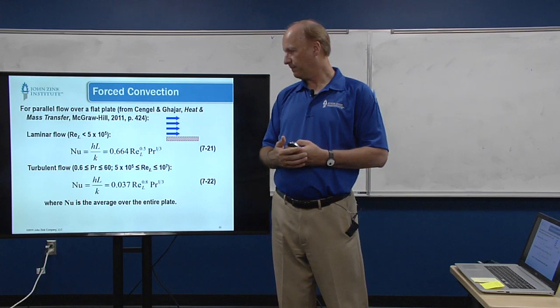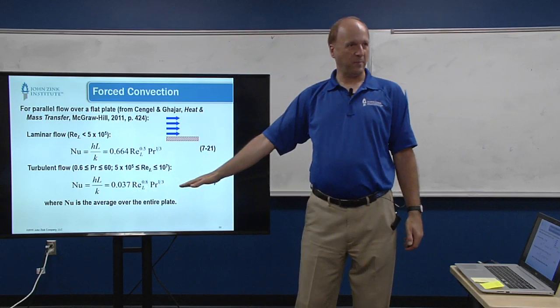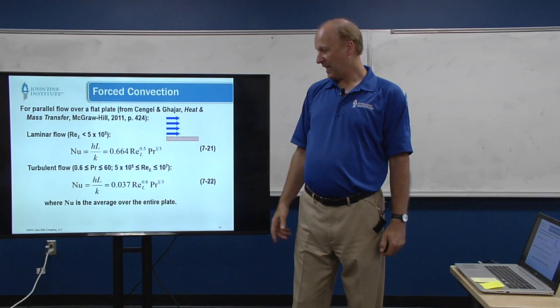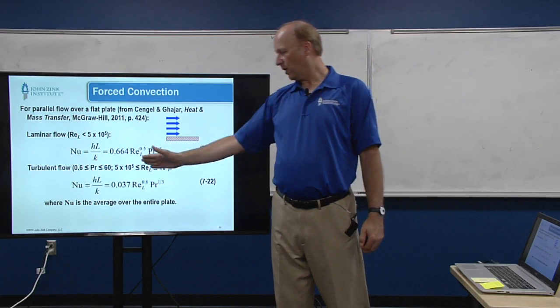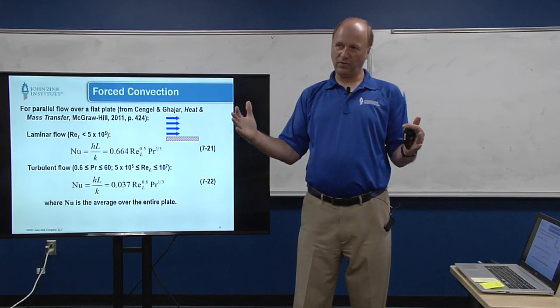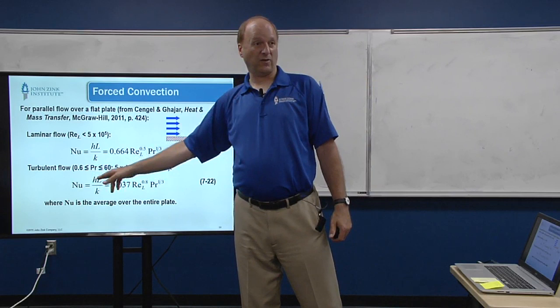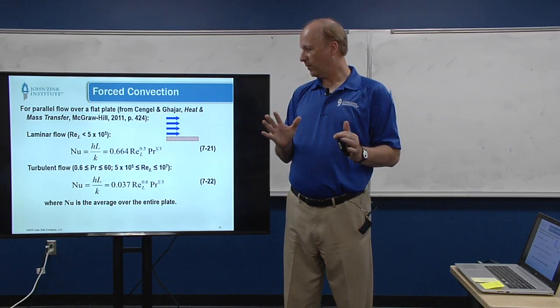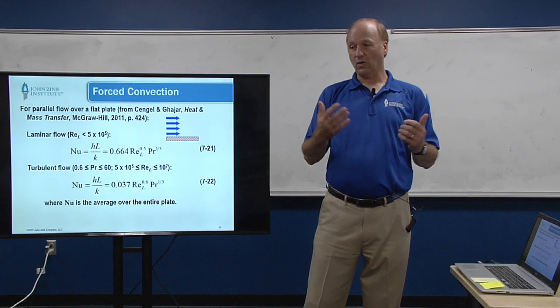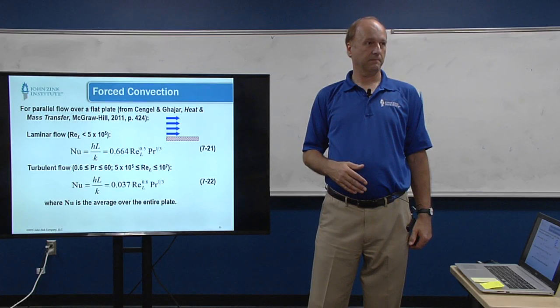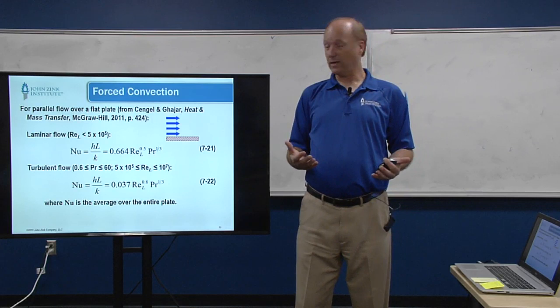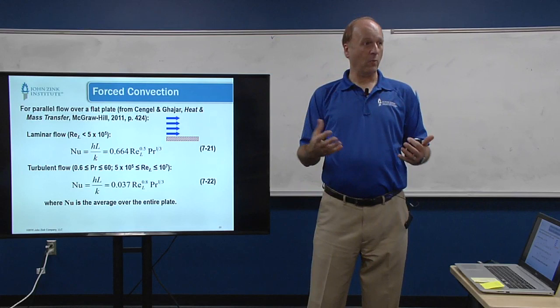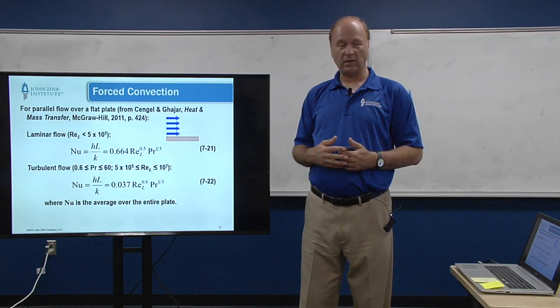For turbulent flow, we use empirical correlations based on collecting lots of data — not exact solutions. The correlation is valid between the critical Reynolds number and about 10⁷, which isn't a particularly wide range. If your Reynolds number falls outside that range — say, 10⁸ — we're pragmatic: we use the best available correlation but build in a larger safety factor, especially if the consequences of being wrong are serious. That's the engineering approach.